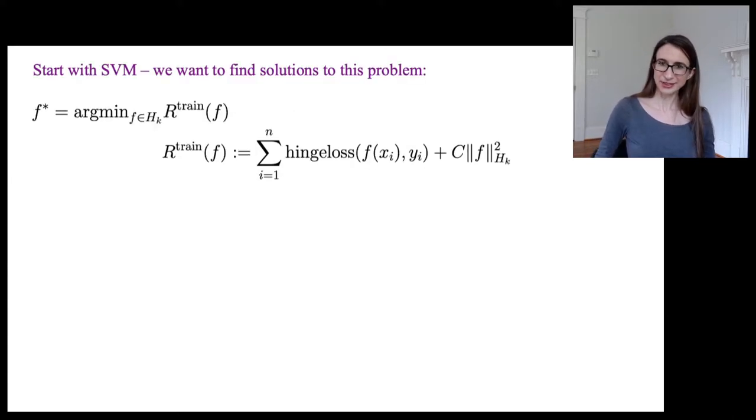Okay, so we're going to start with the support vector machine optimization problem, where we want to find solutions to problems like that one. Notice that I kept the SVM hinge loss here, but the regularization term is a reproducing kernel Hilbert space norm, because we're using a kernel, so we want to be operating in that space.